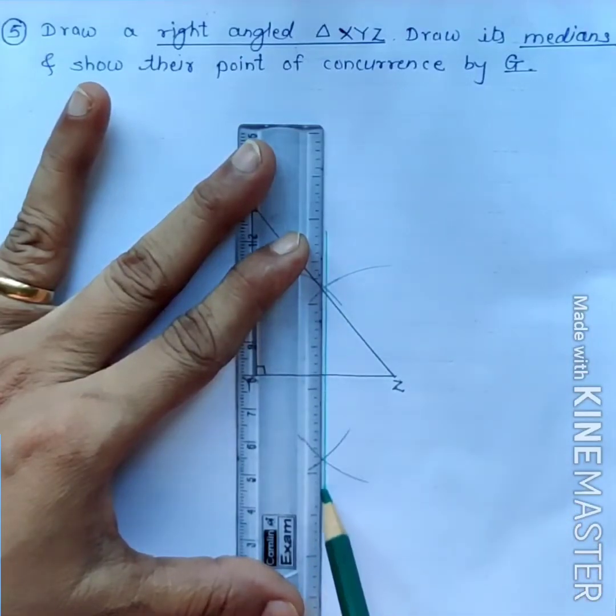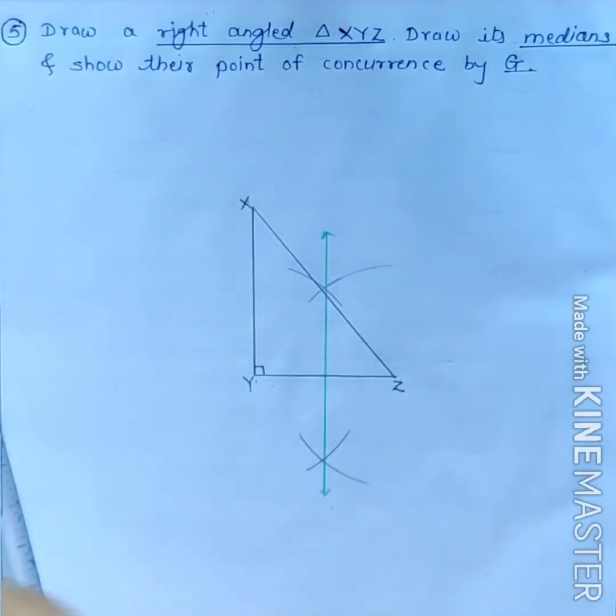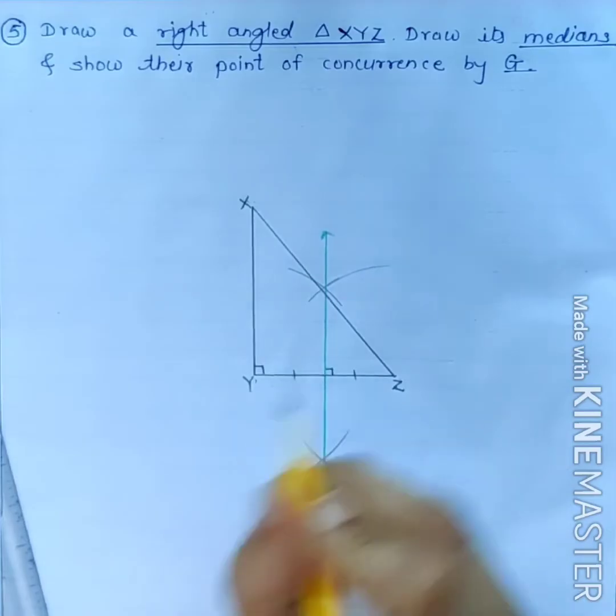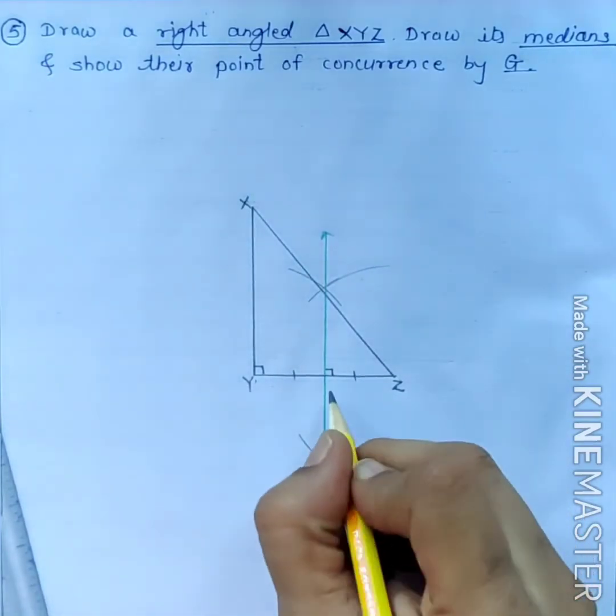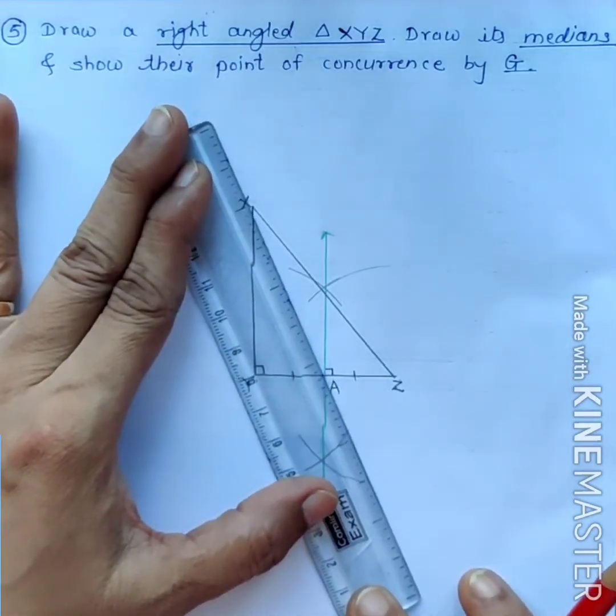This is perpendicular bisector of side YZ. It is perpendicular bisector. You can name this point as A. Now, join XA. This is the first median.